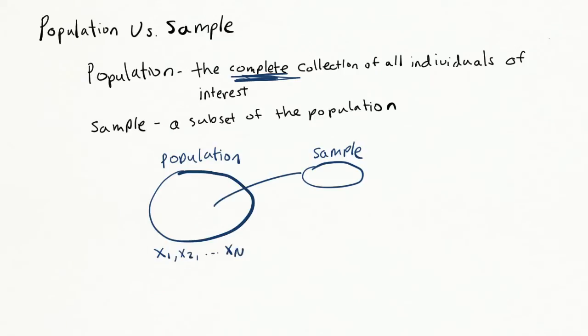The notation for the data in the sample is x1, x2, all the way through lowercase xn. Notice that there are capital N data points in the population and only little n data points in the sample. Therefore, capital N must be more than lowercase n. Also, it is really important that we notice that the sample comes directly from the population.